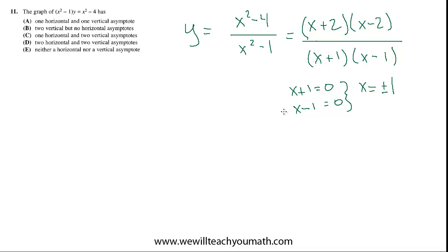That helps us eliminate a couple of choices, because A and E are not showing two vertical asymptotes, so we can get rid of A and E. B, C, and D all have two vertical asymptotes.